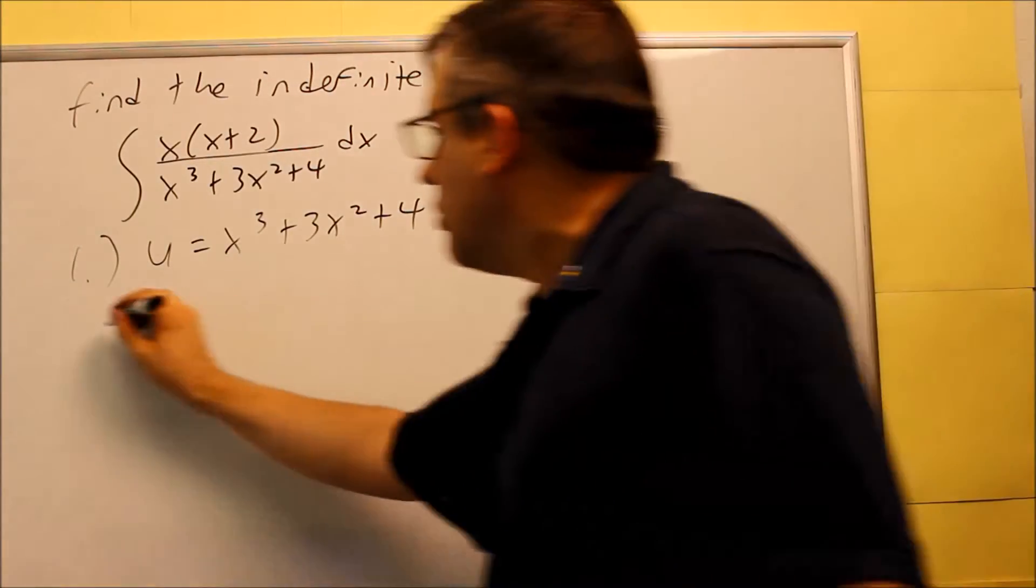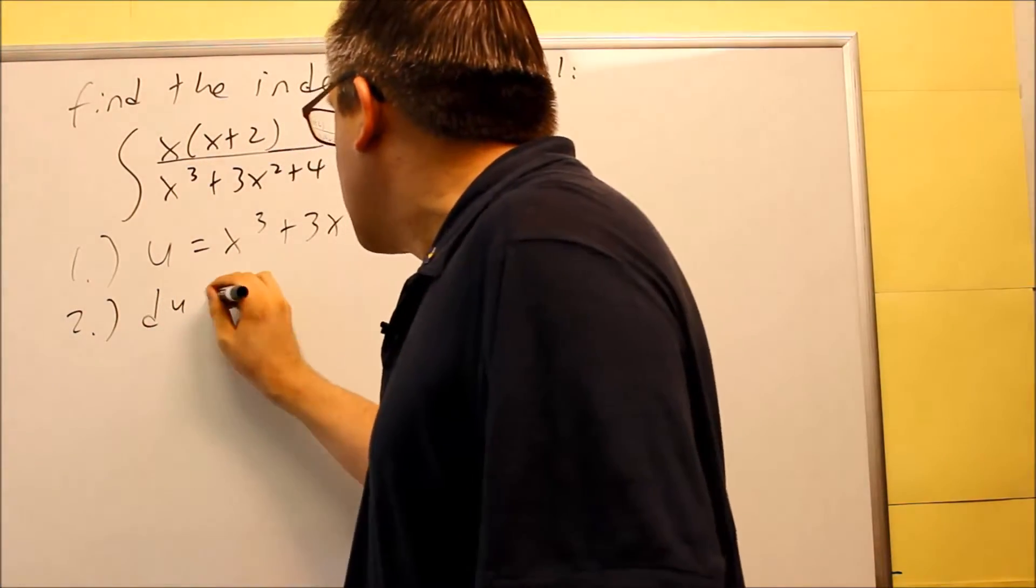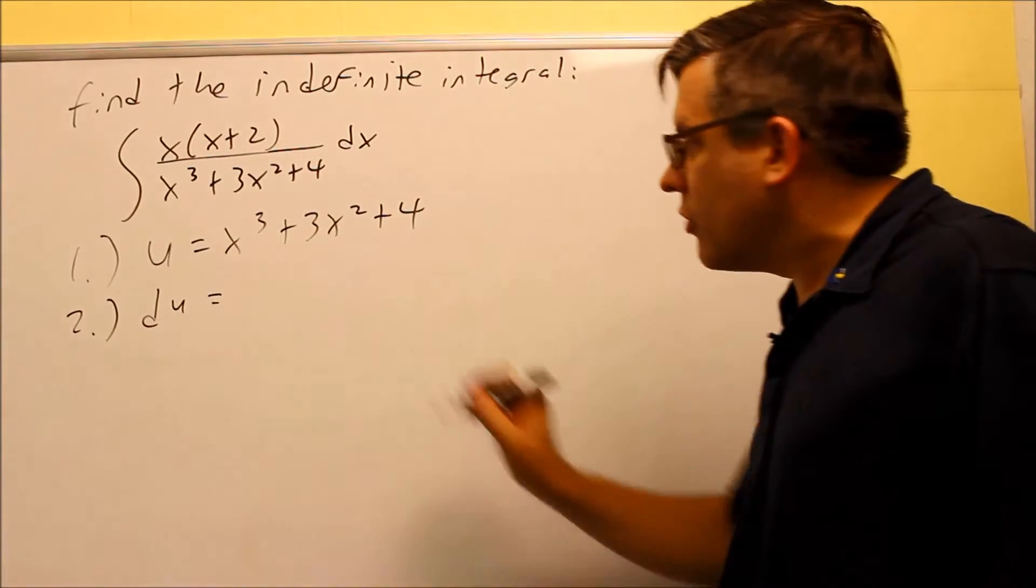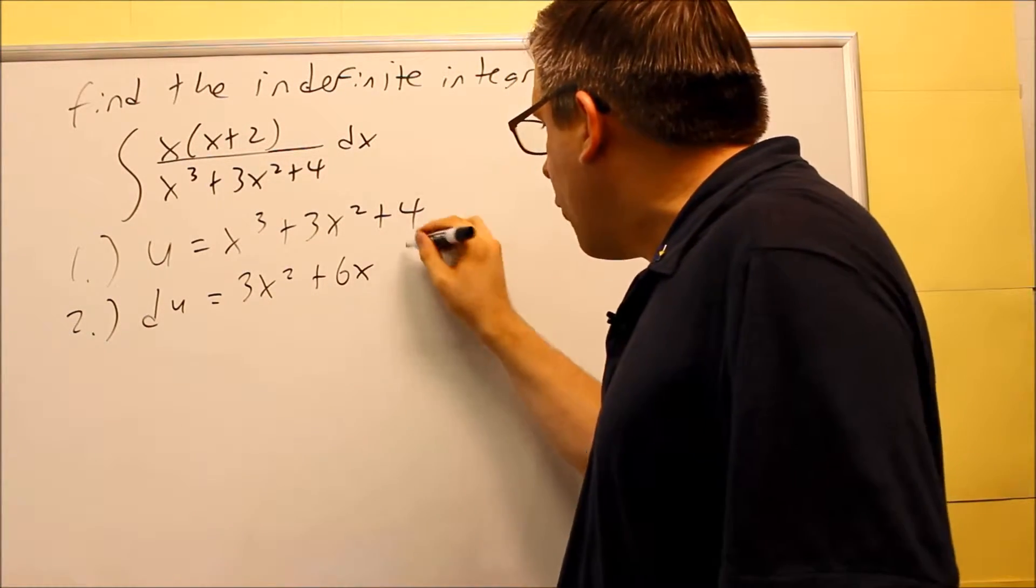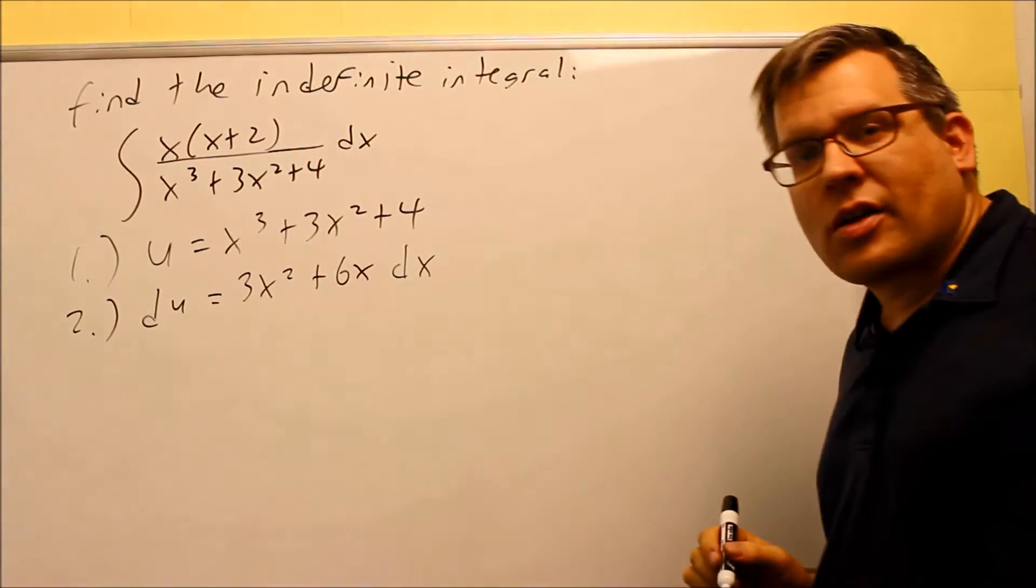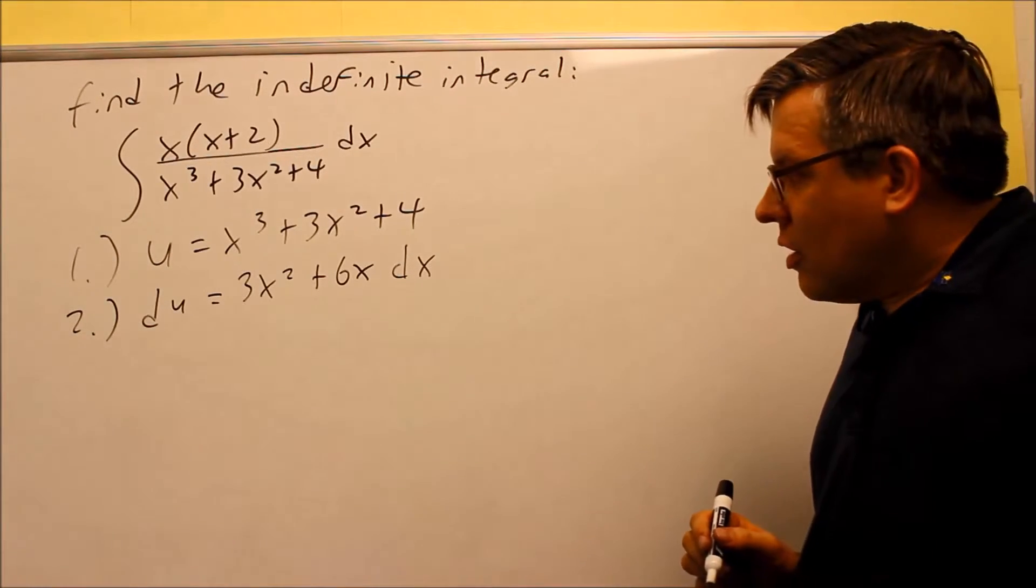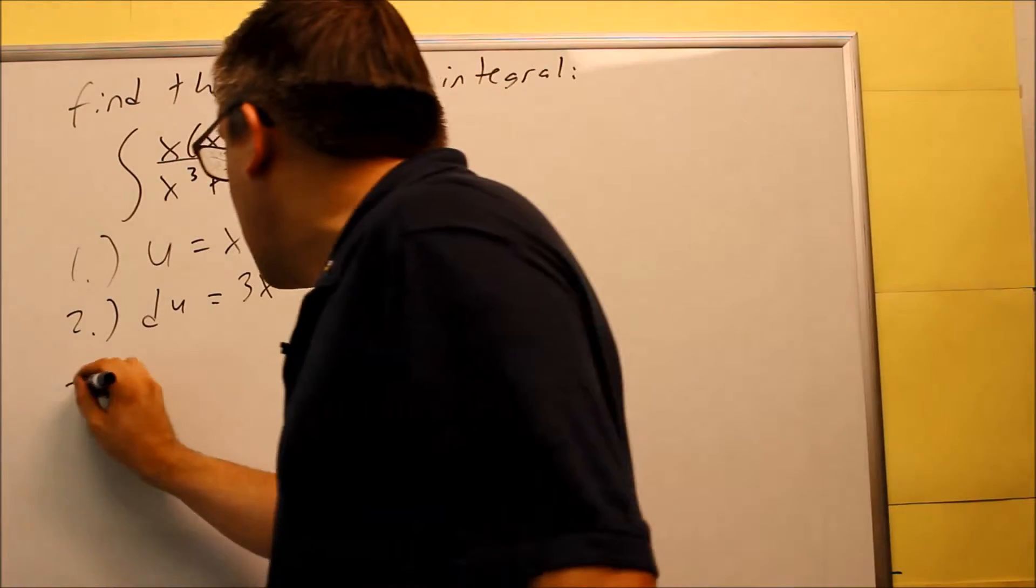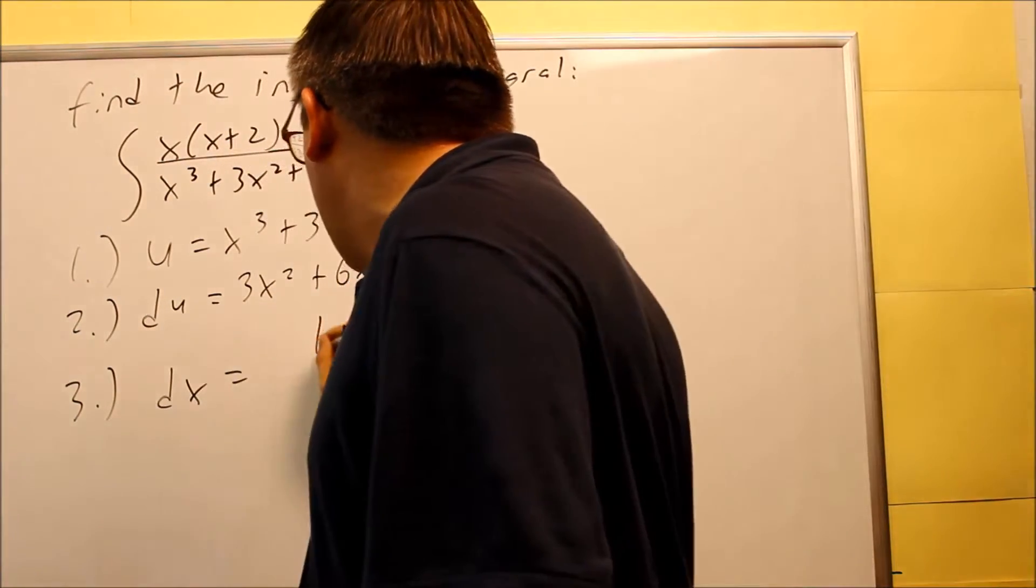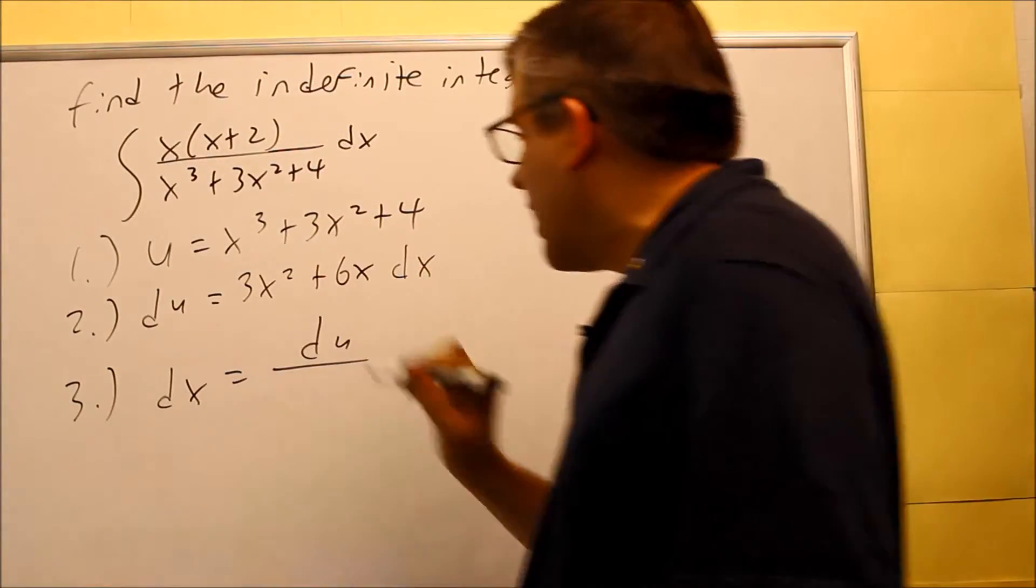And then in step number 2, I want to take the derivative of both sides. So for here, when I take the derivative, I get 3x squared plus 6x, derivative of 4 is 0, and don't forget we have a dx on that side. So at this step, after that, I want to solve for dx, and so when I solve for dx, I get du over this.